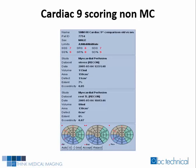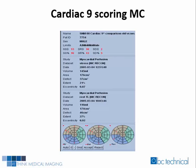Here are Cardiac IX's non-motion-corrected study quantitative scoring results: the summed stress score was seven, the summed rest score equaled zero, and the summed difference score was seven. After motion correction, Cardiac IX's summed stress score equaled 13, the summed rest score equaled 10, and the summed difference score was two.